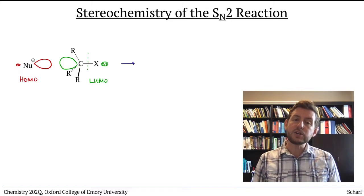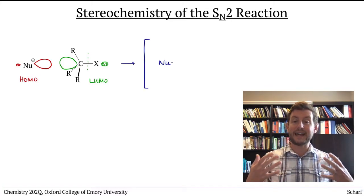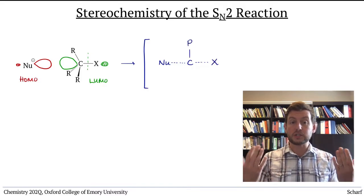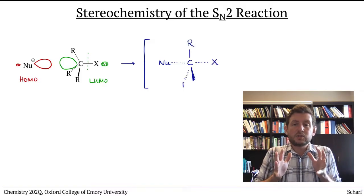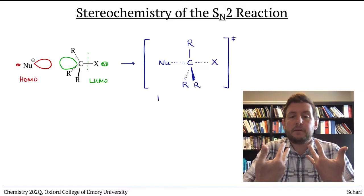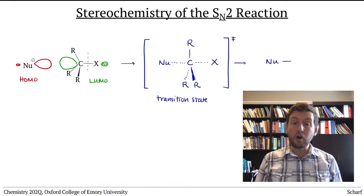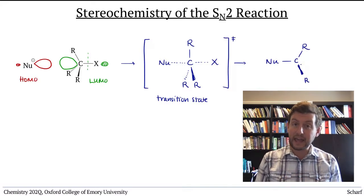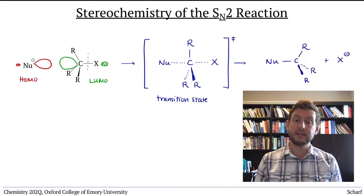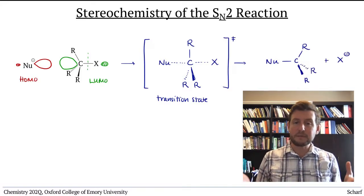The implication of this is that the groups attached to the carbon, the groups that don't leave, do a sort of umbrella flip as the reaction occurs. This always happens in every SN2 reaction, but it usually doesn't make much of a difference.